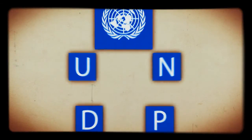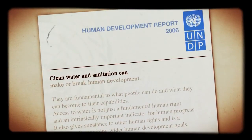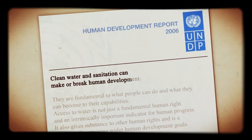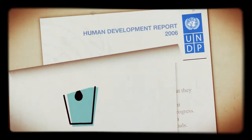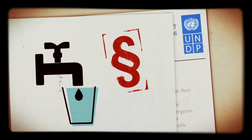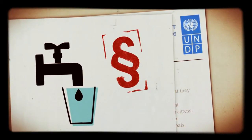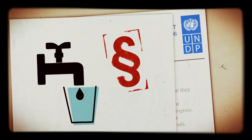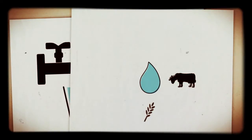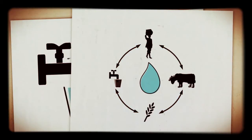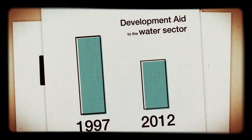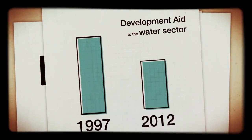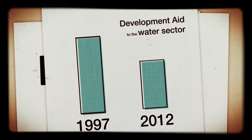The United Nations Development Program states clean water can make or break human development. Access to clean, fresh water has been given the status of a human right. Nevertheless, the water sector still has a relatively low political priority. Few developing countries have efficient water resource management. Since 1997, the annual share of global financial development aid spent on the water sector has fallen from 8 to 5%.